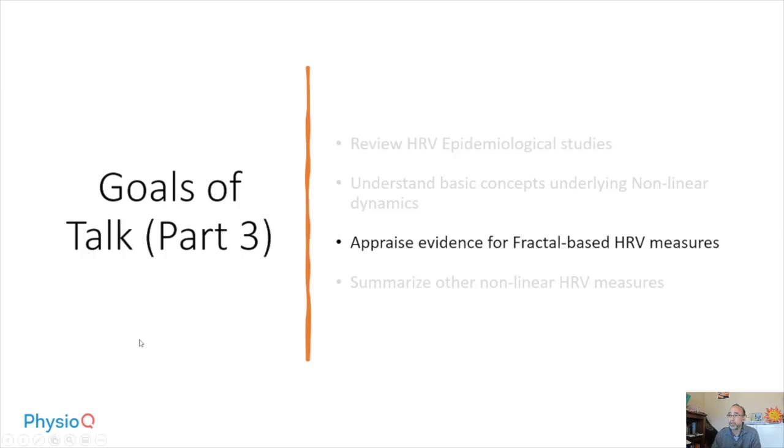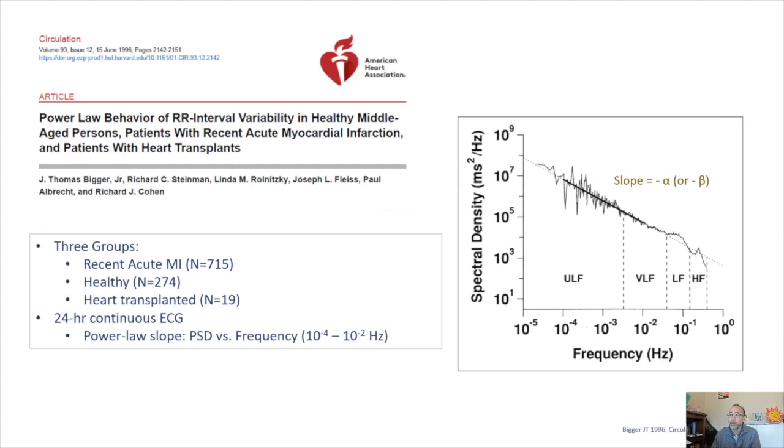Next part is to appraise the evidence for fractal-based heart rate variability measures. The first study that looked into fractal relationships in disease was Bigger in 1996, which was published in Circulation. He had three groups, one with a recent acute MI. He had 715 subjects in this group. Healthy group, which had 274 participants, heart transplant individuals, and there were 19 in this. He took a 24-hour continuous ECG and evaluated the power law slope, which is essentially the power spectral density versus frequency, but paid specific attention from 10 to the minus 4 to 10 minus 2 hertz. And the reason for that is that if you take a look at the spectral density relationship of the heart rate, you see a linear relationship or linearity that exists pretty much from the very low frequencies all the way to maybe about 10 to the minus 2. And then you have these squiggly parts that correlate with the higher frequencies.